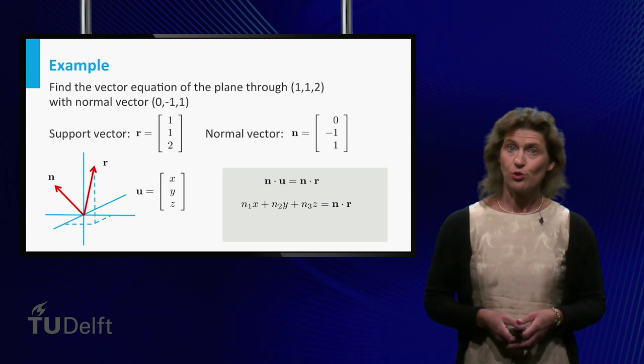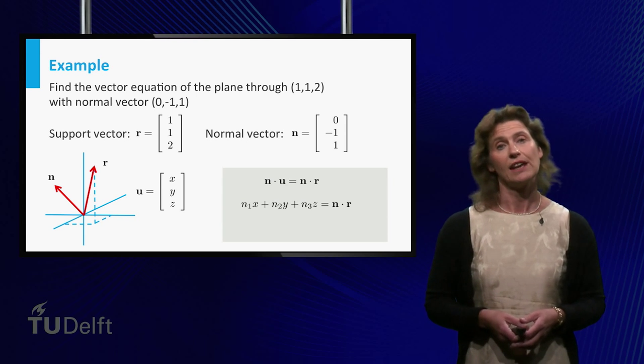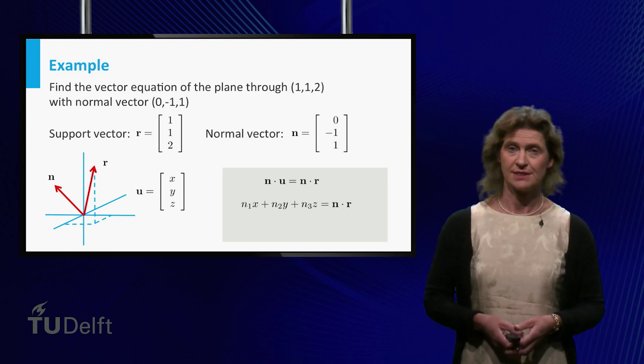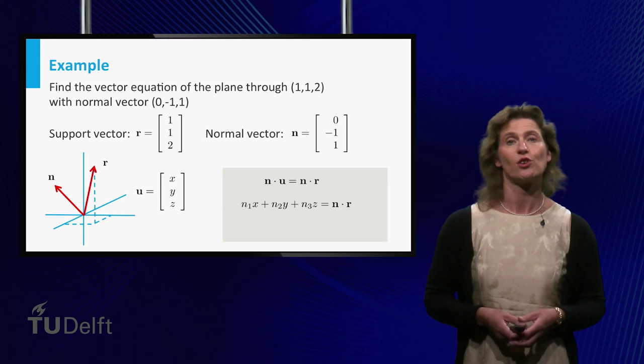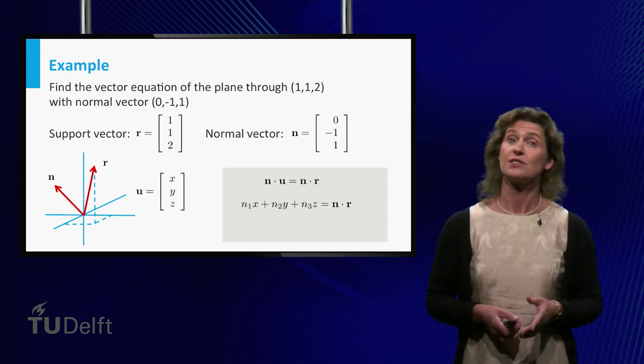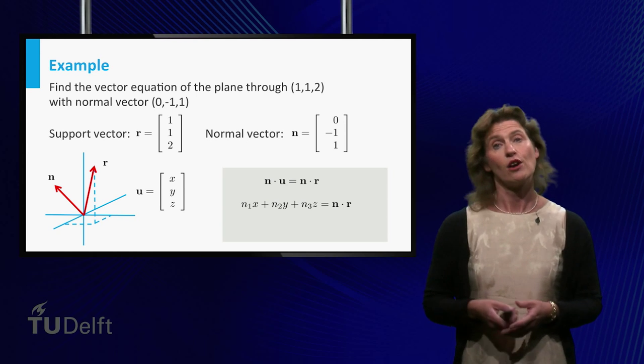If you write it out in the components of the vectors, you get n1 times x plus n2 times y plus n3 times z equals the inner product of n and r. Again, realize that the right hand side is just a scalar.